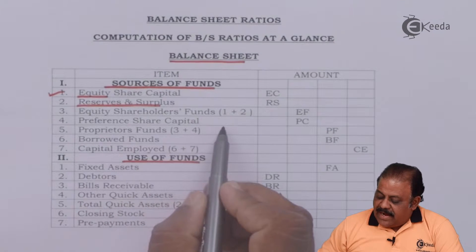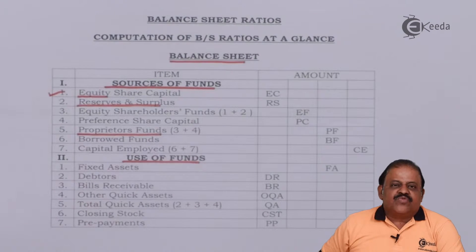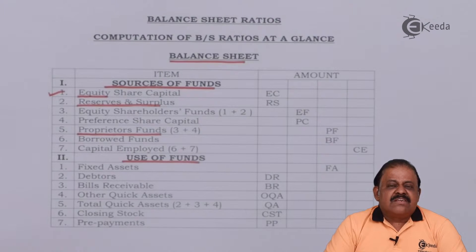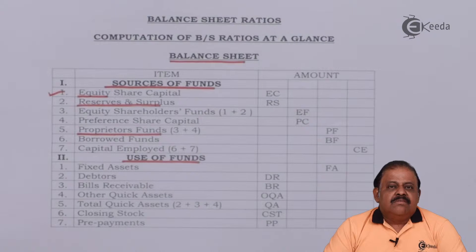Preference share capital will be added and finally we get the amount of owners' fund or proprietors' fund. The next part is borrowed funds, which consists of secured loans and unsecured loans. Secured loans are those on which some security is given by the company, ensuring creditors that their money will not be at risk. For example, assets of the company are given as security to debenture holders. Bank loans are normally secured because banks give loans by taking some asset as a mortgage.